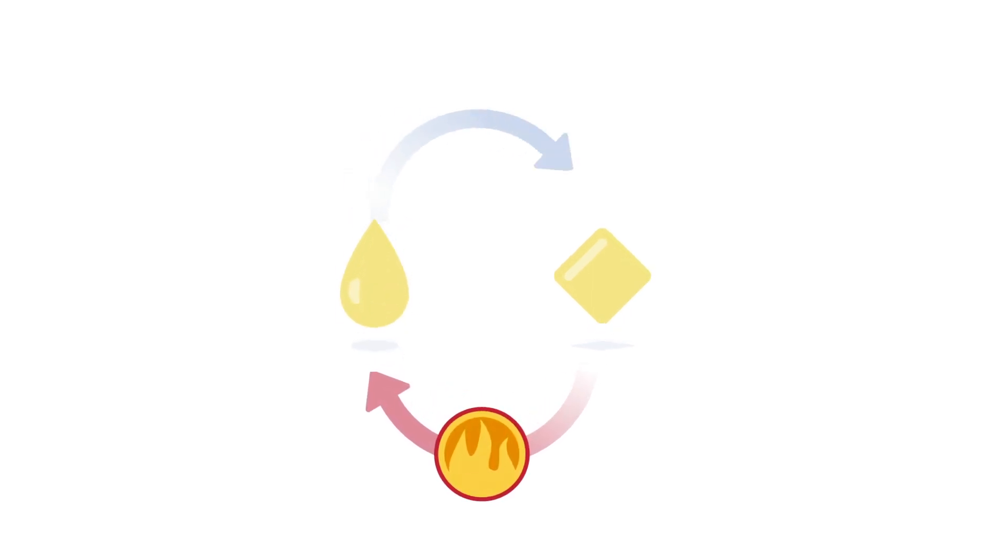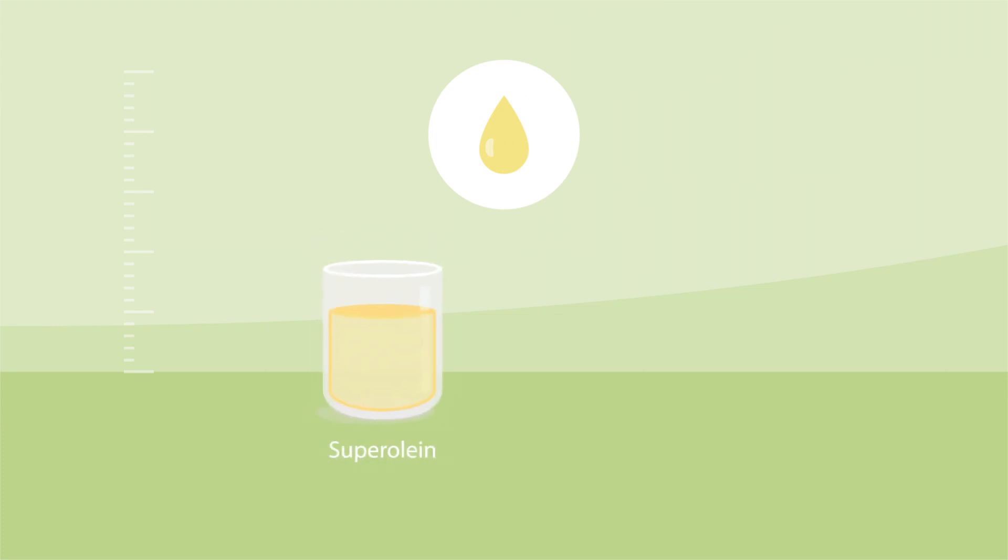The liquids are cooled till crystals are formed and subsequently separated by membrane filtration. The olein fraction is separated into superolein with a melting point of 5 degrees Celsius and a mid-fraction with a melting point of around 28 degrees Celsius.